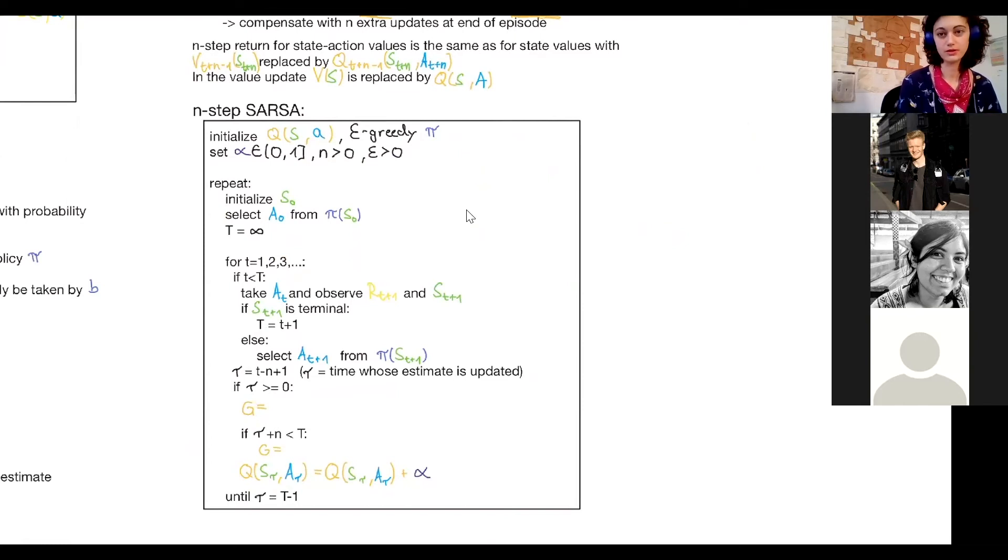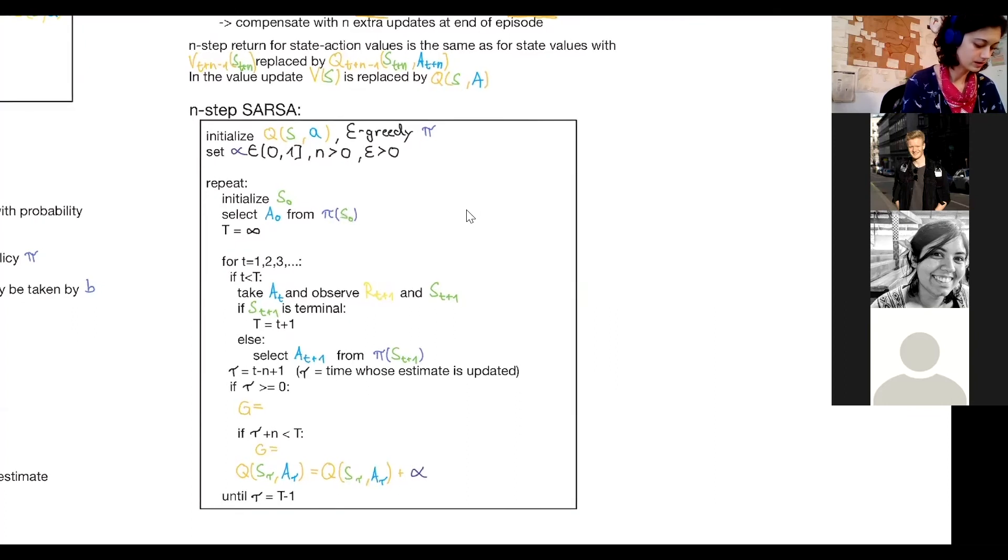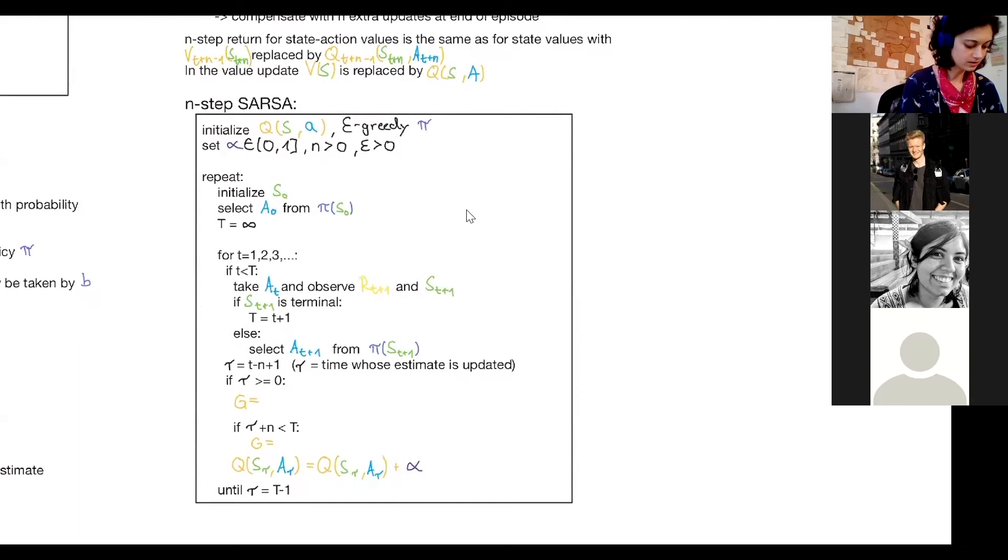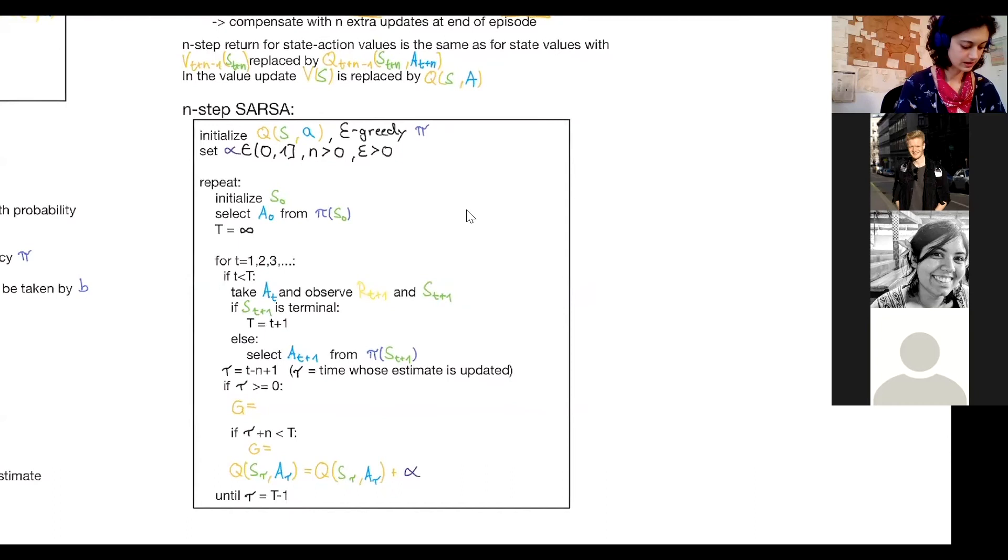So we initialize Q values and an epsilon greedy policy and then we set the step size to a value between zero and one. We set n bigger zero. So if we set it to one, we have TD(0). Let's say we set it to five or so, we look five ahead. And then we set an epsilon bigger zero for our epsilon greedy policy. We initialize a starting state. We select an action from the policy pi and we set big T to infinity because we don't know yet when the terminal state will appear. And then we go through time steps t. If t is smaller than the terminal state, we take an action, observe a reward and the next state. And if the next state is terminal, we set big T to time step t plus one. Otherwise, we select a next action from the next state using the policy.